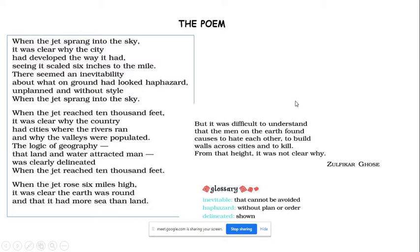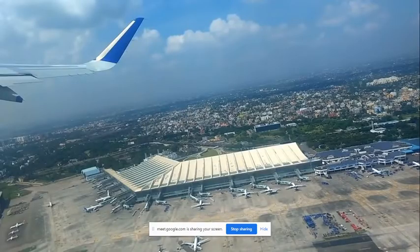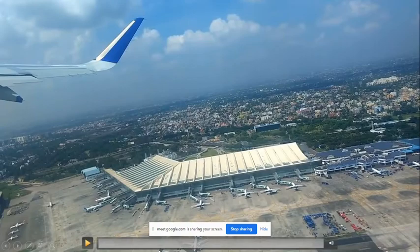In the next slide there is a video which shows the rising of a flight and, as it goes higher and higher, how things look from there. This flight is from Kolkata to Delhi — just watch and realize what the flight is all about and what things we get to see when it actually goes up there.